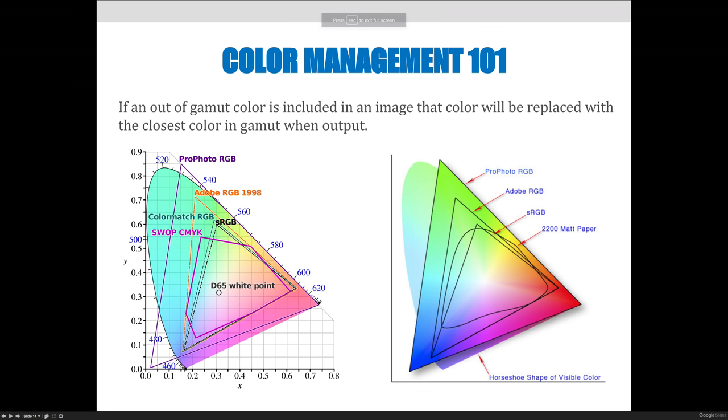This is a visual representation of the gamuts or the ranges of colors that different output devices can create. They're a little complex to look at, so I'm going to start on the right hand side because I think that image is a little bit less crazy.